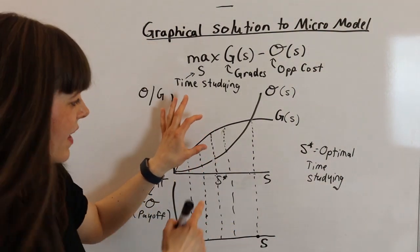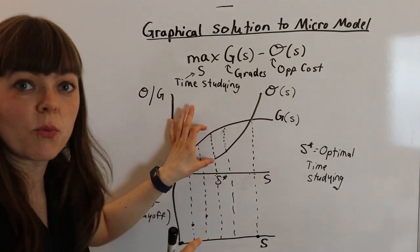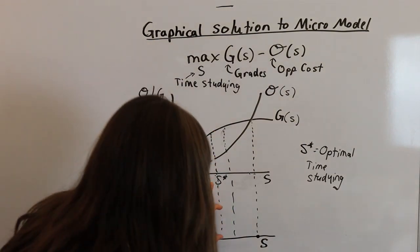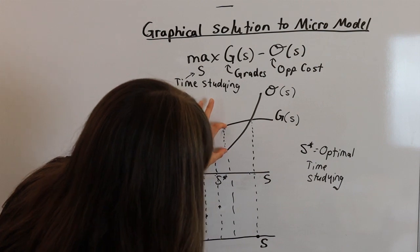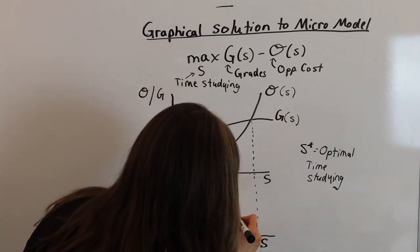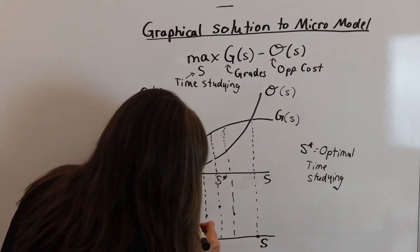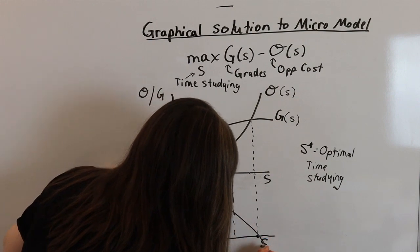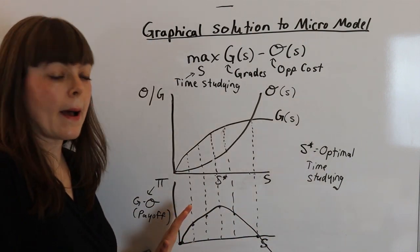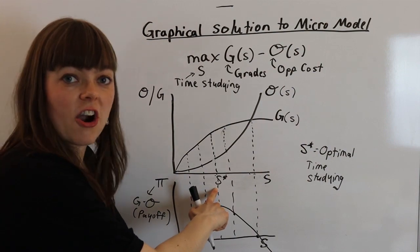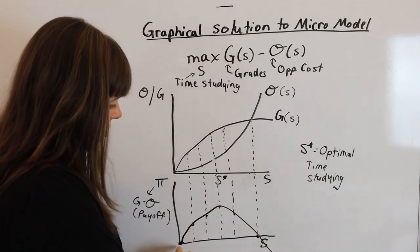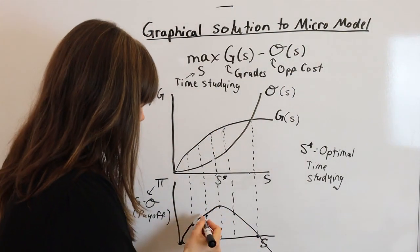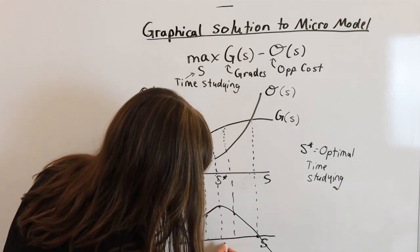And of course, we know the S star, the optimal, is going to be where the distance between those is highest. And then after that, it gets smaller. So if we graph these, what we're going to find is that this function maxes out at S star, where this whole function represents our total payoff. So this will be S star.